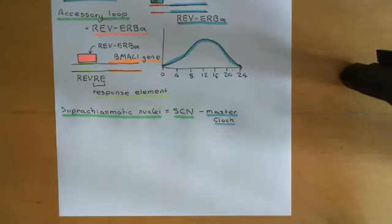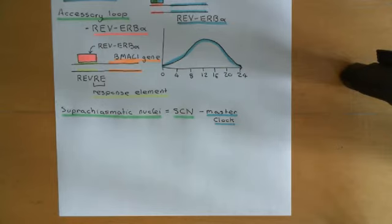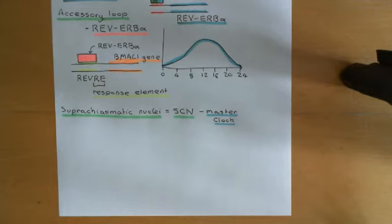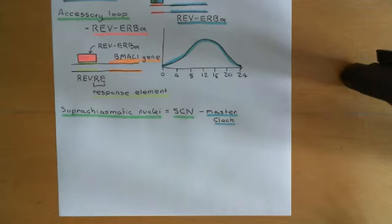Before discussing what the suprachiasmatic nuclei actually do — how they maintain synchrony with the light-dark cycles and communicate to all other cells of the body — I want to first discuss the anatomy of the suprachiasmatic nuclei in the human, so that we know what we're talking about. I'm going to start by drawing a basic picture of the brain to show where the hypothalamus is, and then where the suprachiasmatic nuclei are within the hypothalamus, not assuming any prior knowledge of neuroanatomy.